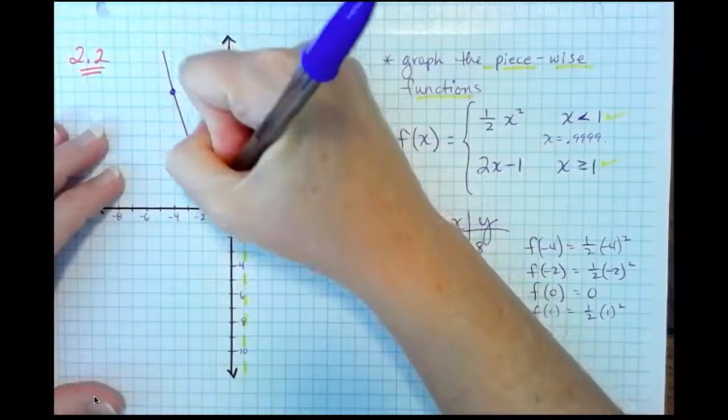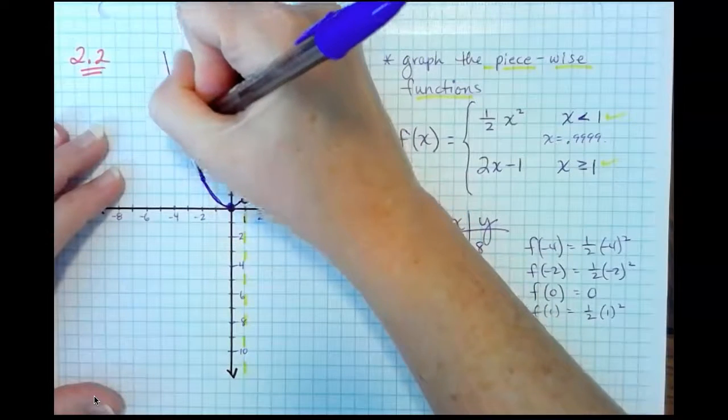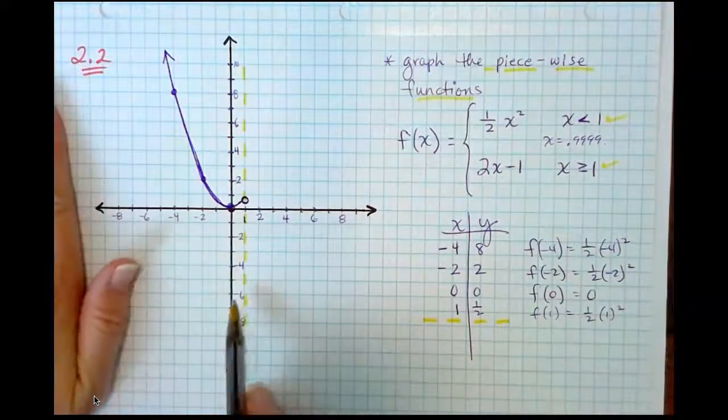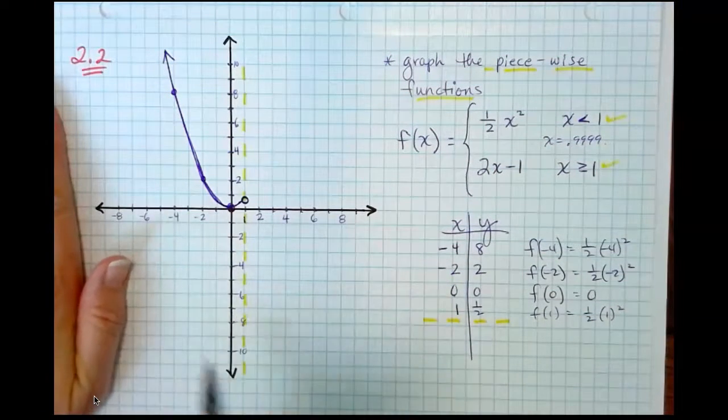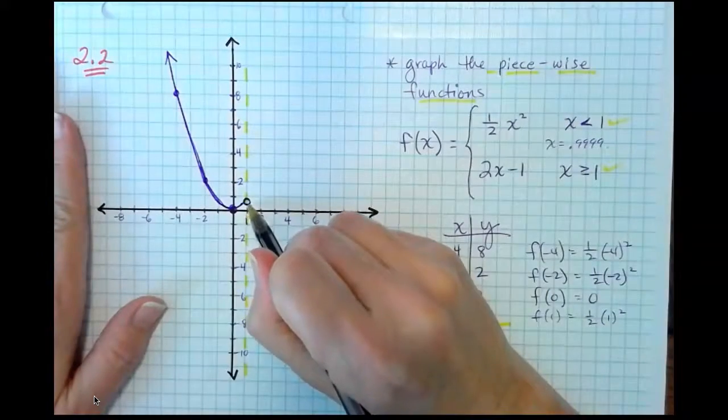Remember, this is a parabola. It's a nice, smooth curve. I'm trying to make it nice and smooth. So there we go. This is the left-hand side. This is everything to the left of x equals 1. Once again, that is open.